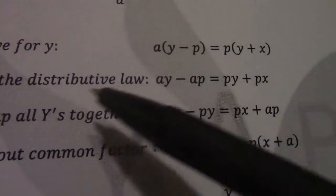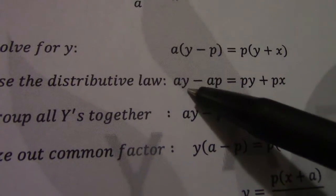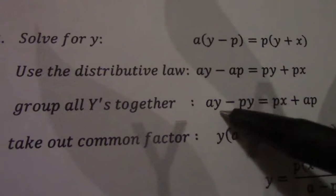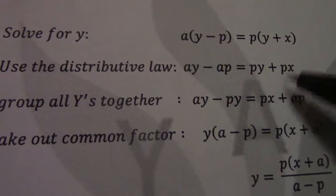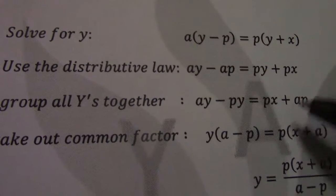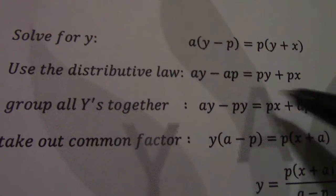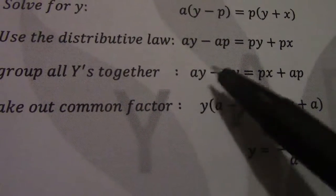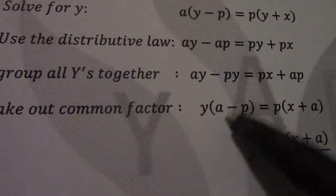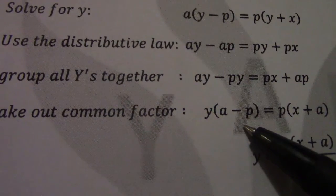Now I want y. Remember it says solve for y, so I am going to group all my y's together. So there I put a y. If I take py across, minus py. The side I have px, if I take ap across becomes plus ap. There I take out y as a common factor. So a y if I divide by y that leaves a behind, there leaves minus p behind.